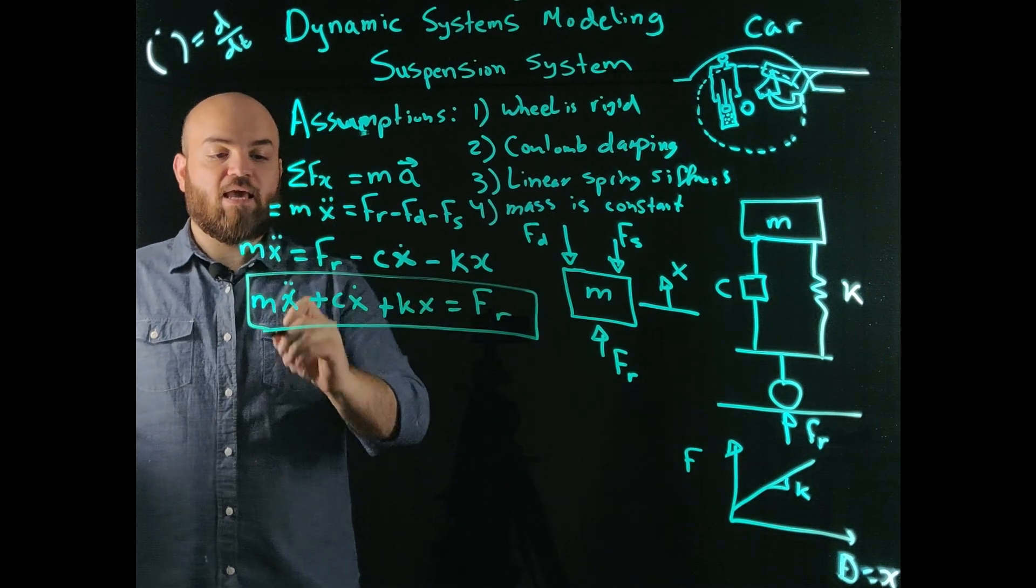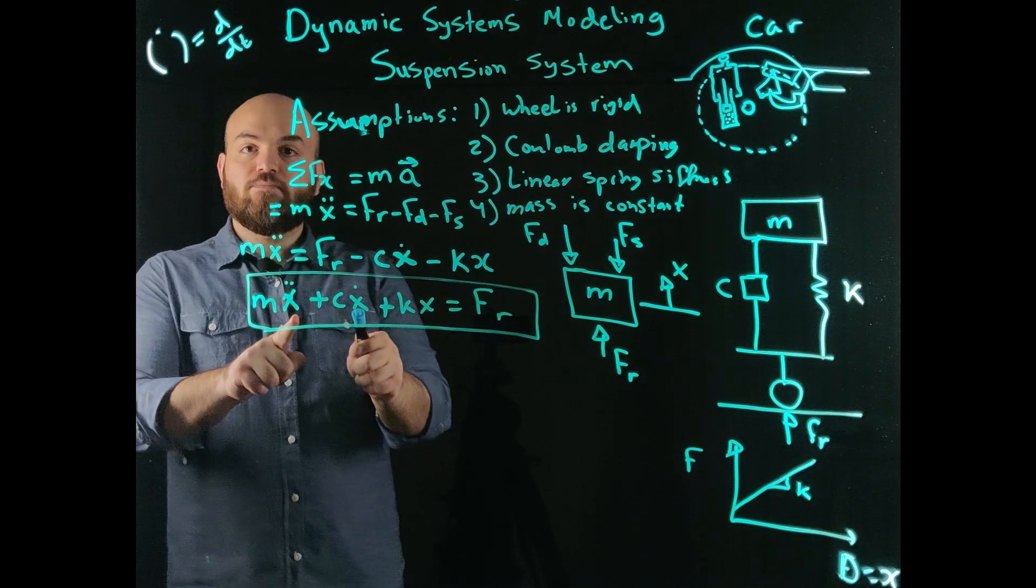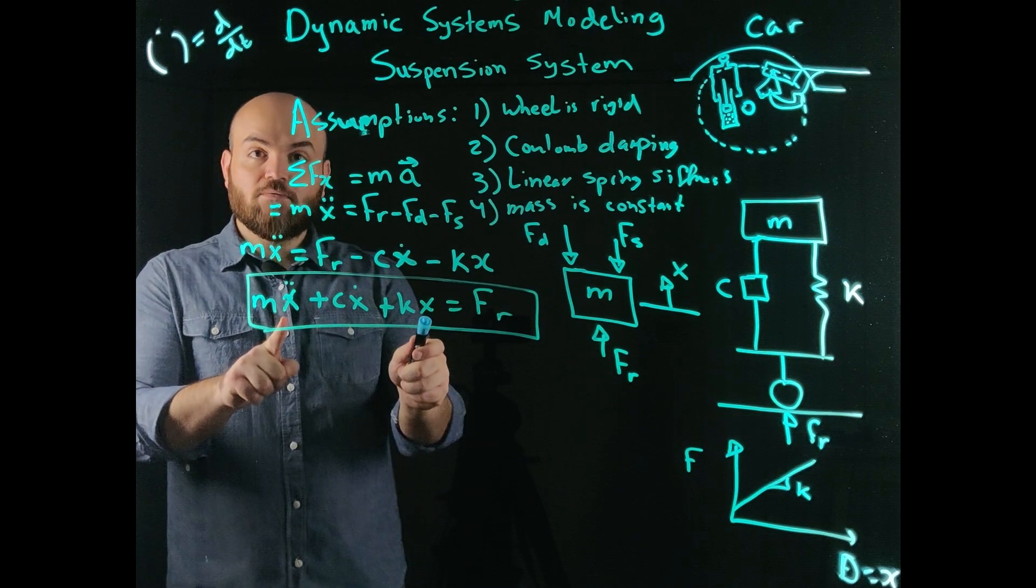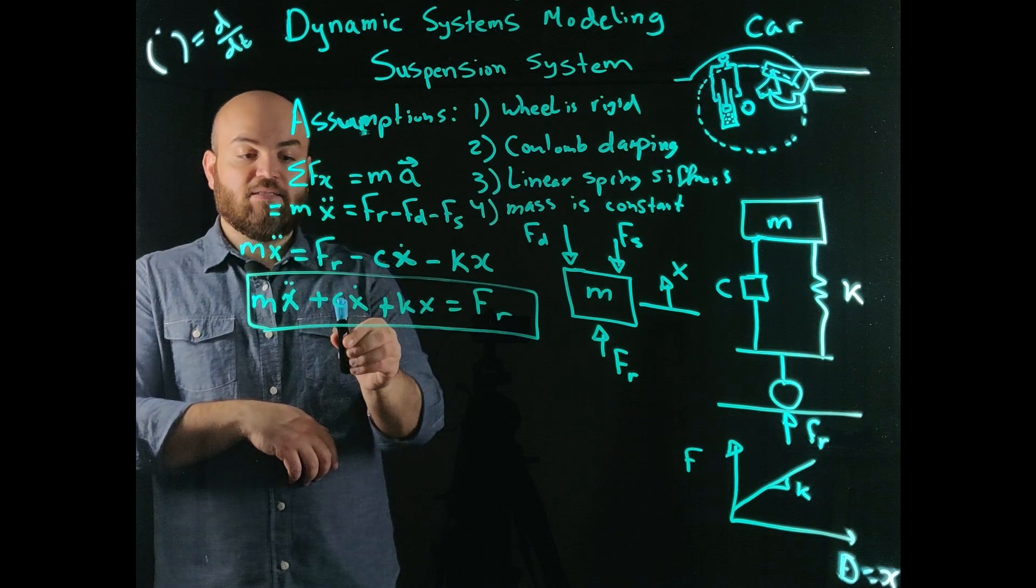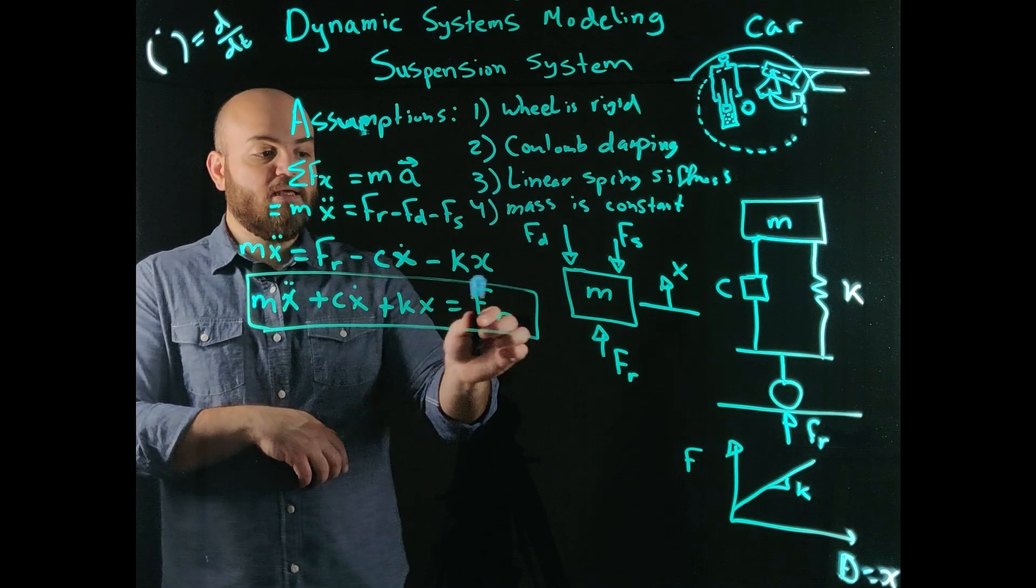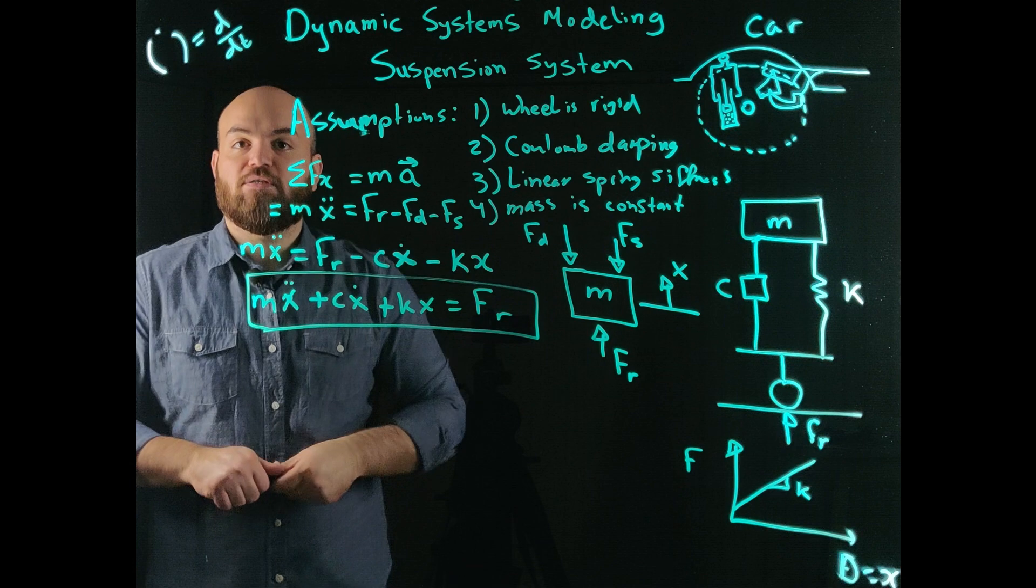So this is a second order linear differential equation with constant coefficients. Because mass, damping, stiffness are assumed to be constant. And it's non-homogeneous.